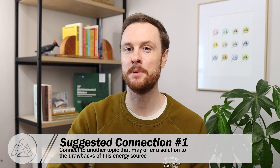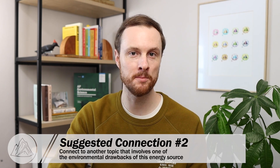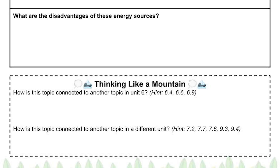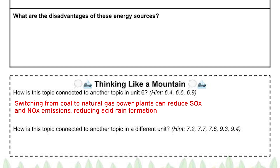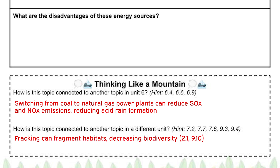For our 'thinking like a mountain' section of the Unit 6 frames, there are two types of connections to other topics that are really helpful to make. The first is to connect to another topic that might offer a solution to reduce the environmental impacts of this energy source. The second is connecting the environmental problems that result from these energy sources to different topics in different units. For example, in our natural gas frame, we might say that switching from coal to natural gas-fired power plants could be a solution to reduce acid rain from topic 7.7, because burning natural gas releases less SOx and NOx than burning coal, and those are the pollutants that contribute to acid rain. We might also connect the problem of fracking for natural gas to the issue of decreasing biodiversity, pulling in topics like 2.1 or 9.10 to explain how habitat fragmentation from fracking can decrease biodiversity.